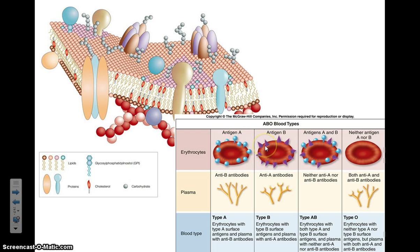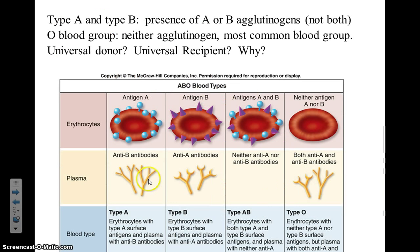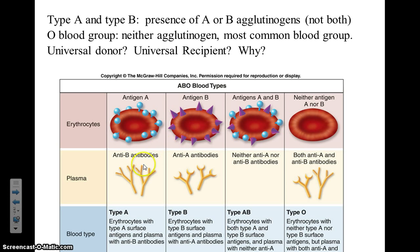Basic shapes that are familiar to us are commonly used instead of complex protein shapes that would normally be found in the body. A person that is type A blood type has type A antigens on their blood cells. They produce anti-B antibodies so that if someone's blood that is type B is introduced into their body, their antibodies will recognize that as foreign and generate agglutination or blood clumping.